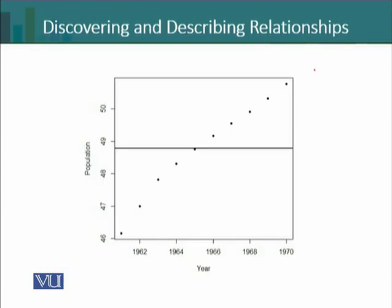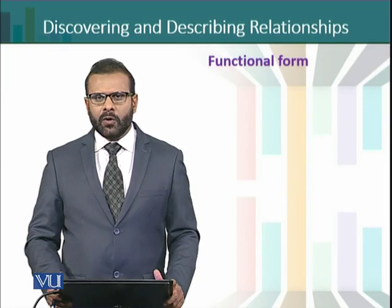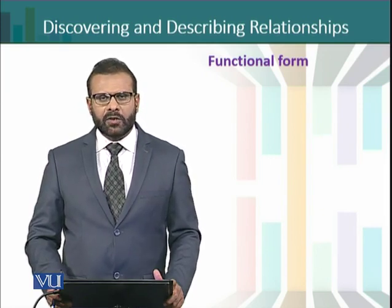Looking at the graph, the dots are the original observed series while the solid line is the mean value. The difference between an observed point and the mean value is the error — how much error we are making while using the mean line as an estimate. There are errors of significant magnitude; some are negative and some are positive. We can easily observe that using a single mean value as an estimate of this population time series is not good enough.